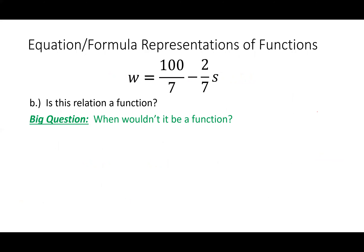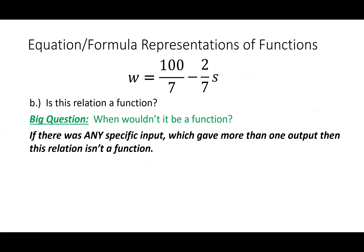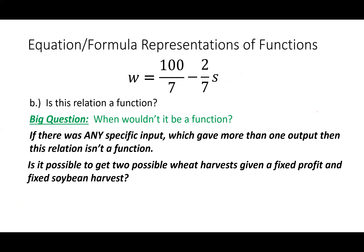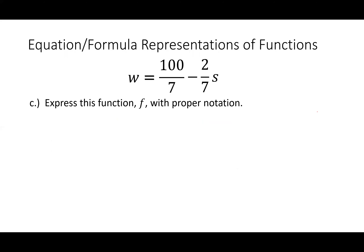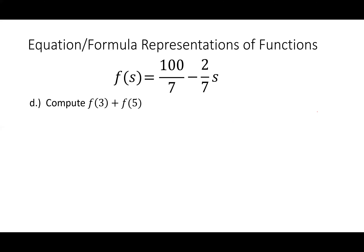Now, is this relation a function? The question we should ask is: when wouldn't it be? It wouldn't be a function if I had two outputs for one given input — if you gave me an amount of soybean and I could get two answers for wheat. That's not possible, because if you give me some amount of soybean, there's only one value of wheat that gives a $10,000 profit. So let's express this as a function F with proper notation: F(S) = 100/7 − (2/7)S.